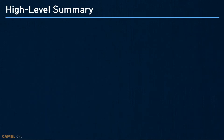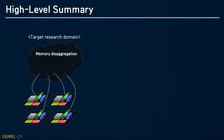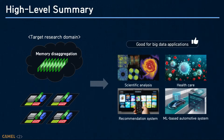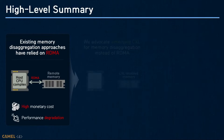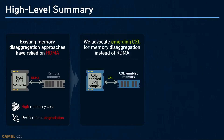Before moving on to the main talk, I will give you a high-level summary. Our work's main research target is memory disaggregation, which can satisfy large memory requirements of various big data applications. Existing memory disaggregation uses RDMA, but RDMA requires high monetary cost for specialized network interface cards and switches, and it also degrades application performance because of microsecond-level memory access latency. Instead of RDMA, we suggest using CXL for memory disaggregation.